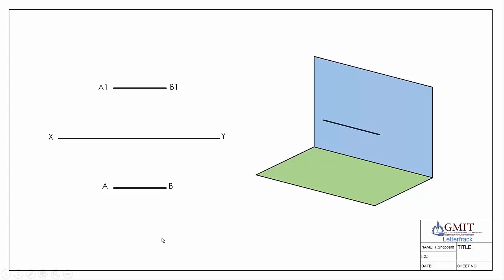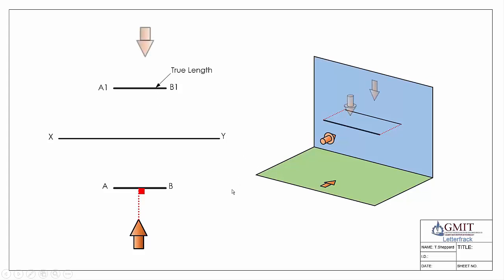Looking from plan view straight in at the object, we are looking perpendicular to it — that's what gives us our front elevation. The line is projected onto the vertical plane giving us a true length line. Likewise, looking from above gives us our plan view; we are looking straight down at the line, the line is parallel with the XY line, so it meets both conditions and gives us a true length line in plan view as well.